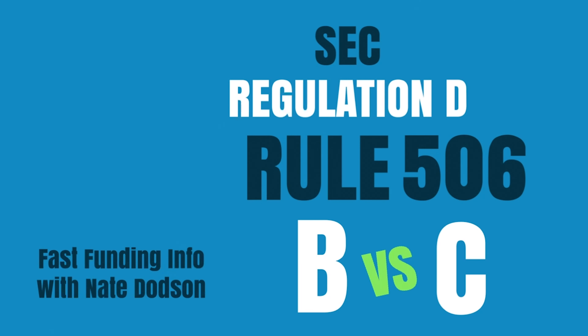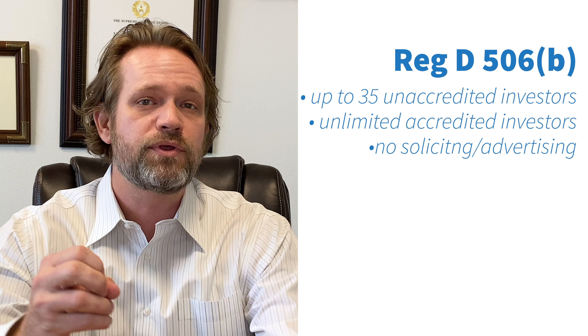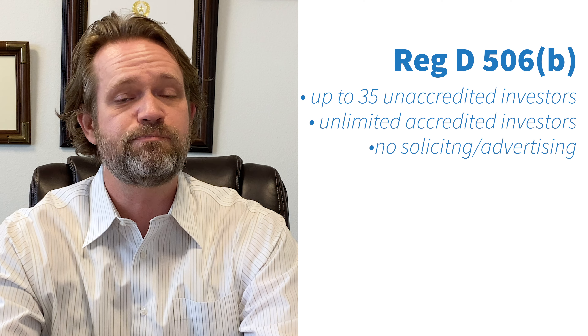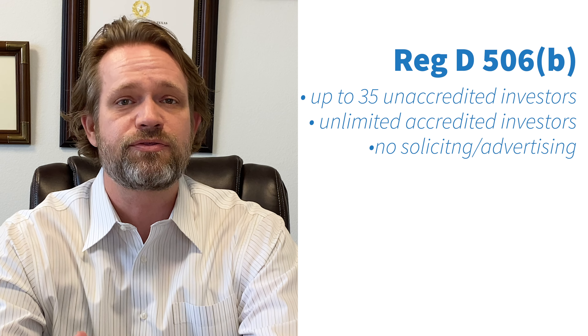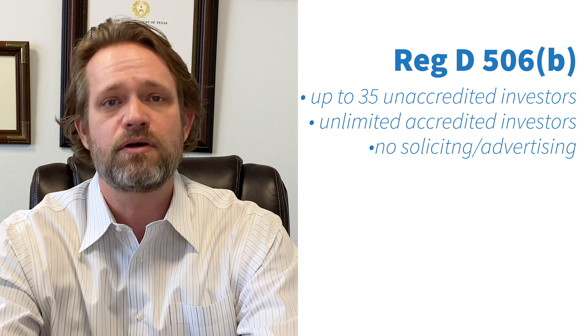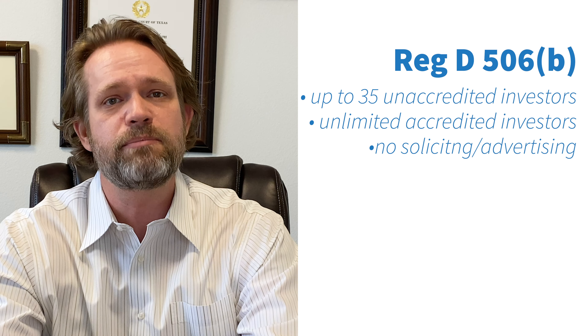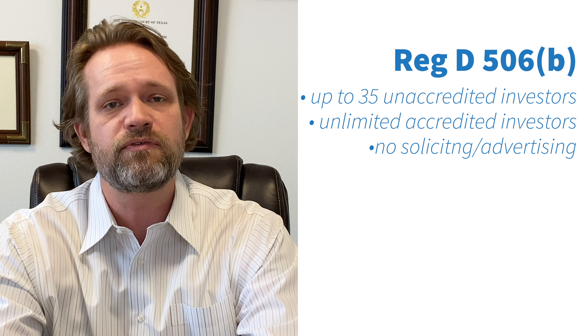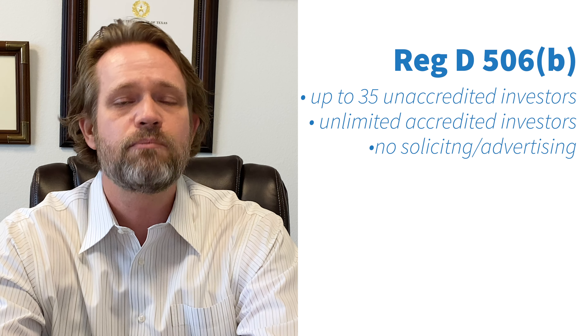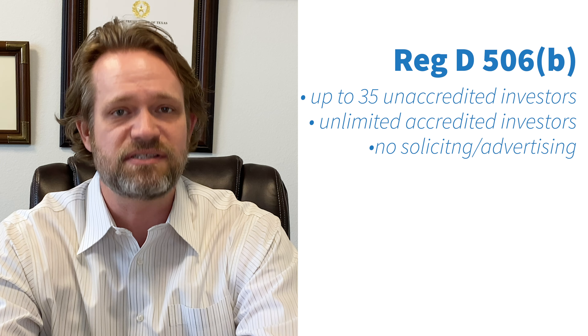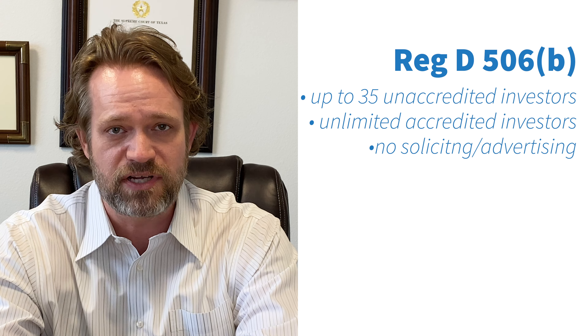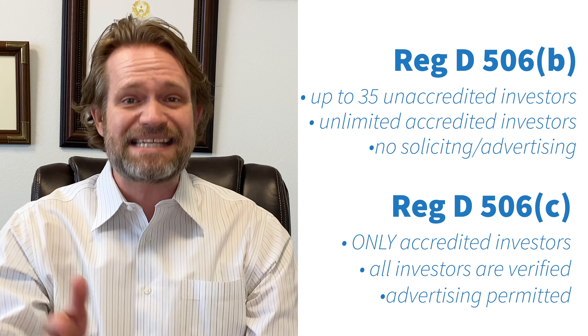What's the difference between Reg D 506B or Reg D Rule 506C? With Regulation D Rule 506B, you're allowed to have up to 35 unaccredited investors, an unlimited number of accredited investors, but you're not allowed to generally solicit for those investors.